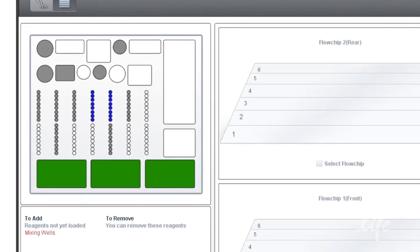All reagents required for the run will be highlighted in white. All mixing wells will be highlighted in blue. Reagents not required for the run will be in grey.